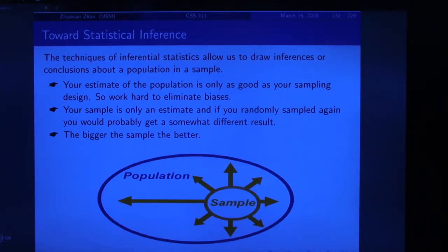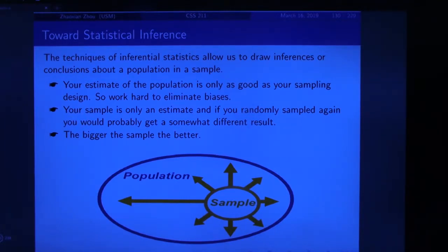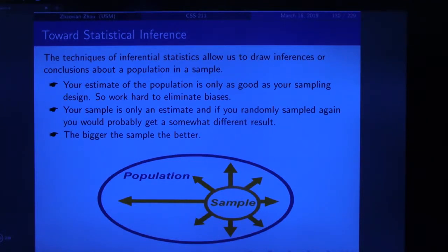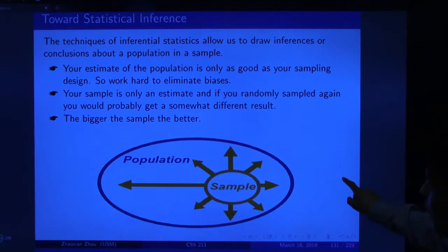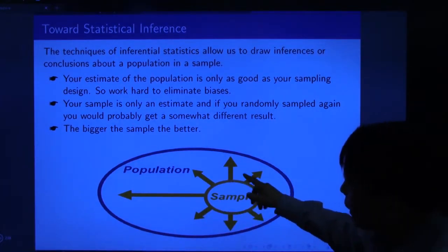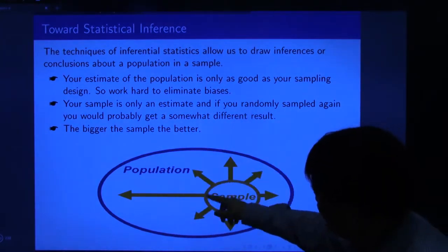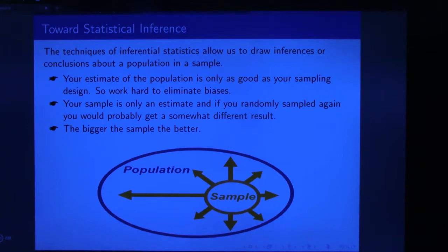Which sample is better? Both samples are estimates of the population, so which one is better? Our class has 35 students; another class may have 100, and another may have only 5. Which gives a better estimate of the USM student GPA? The conclusion is: the bigger the sample, the better. If the class size is 100, that estimation is better than our 35, and much better than a class of 5. So this is the sample, and we want to estimate the parameter of the population from the statistic in this sample — this is called statistical inference.